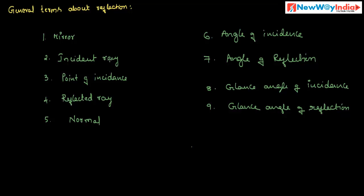Let us discuss general terms about reflection. These are the important terms related to reflection of light: mirror, incident ray, point of incidence, reflected ray, normal, angle of incidence, angle of reflection, glancing angle of incidence, and glancing angle of reflection. Let us discuss them one by one.